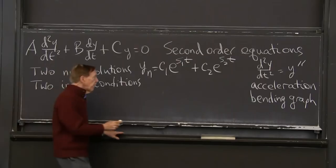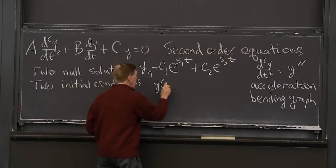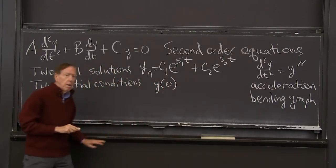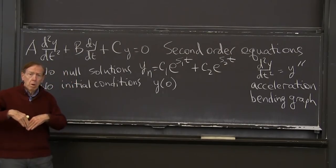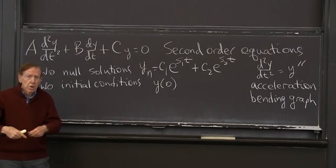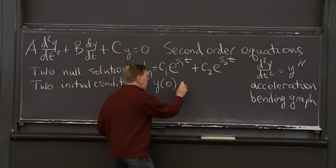So previously, for a first order equation, we were given y of 0. Now, when we have acceleration, we give the initial velocity y prime of 0.